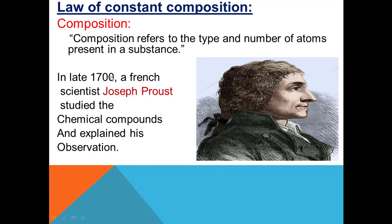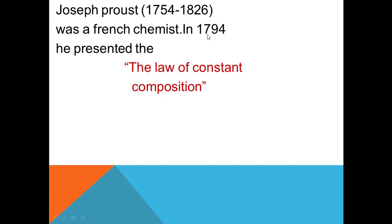In the late 1700s, a French scientist Joseph Proust studied chemical compounds and explained his observations. A chemical compound is formed when two or more atoms chemically react in a fixed ratio. Joseph Proust studied chemical compounds and, along with his chemical compound explanation, he also put forward a theory about the law of constant composition.